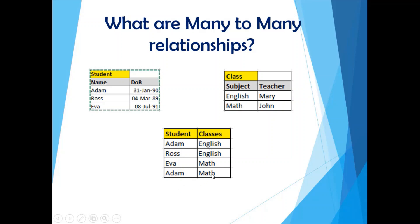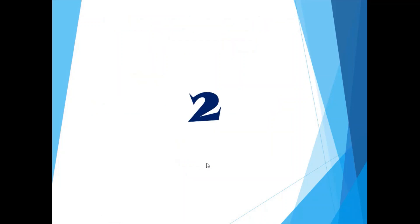If we look at the classes Adam is taking, he is taking both English and Math. If we look the other way — how many students are taking the English class — it's being taken by both Adam and Ross. So Adam is related to two records in the class table (English and Math), and the English subject is related to multiple records in the student table (Adam and Ross). This is a many-to-many relationship.